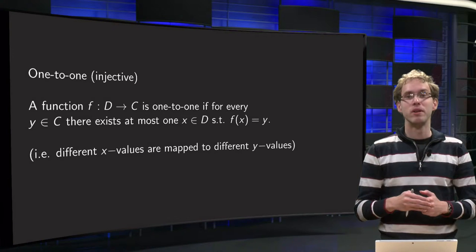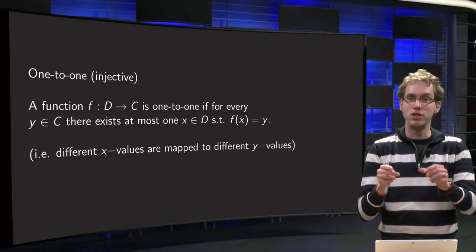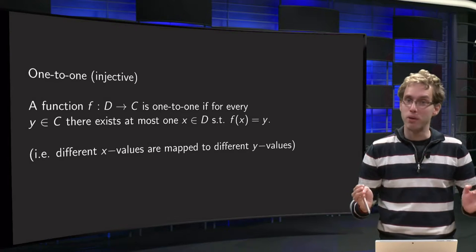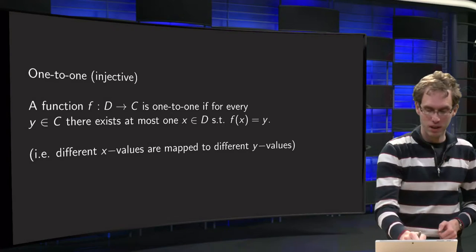So you always look starting from the codomain, and you go to all points and you check whether there is any point where more x's are mapped to the same point. Let's do an example.